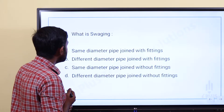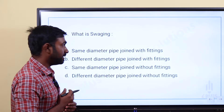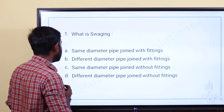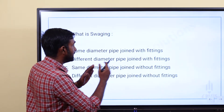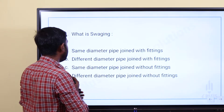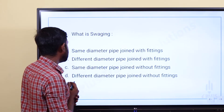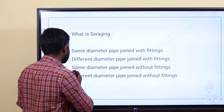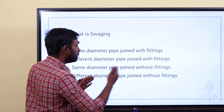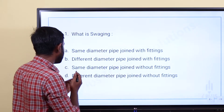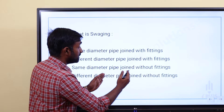What is Swaging? Swaging — what is the same diameter pipe joint with the fitting? Option B: different diameter pipe joint with the fittings. Option C: same diameter pipe joint without fittings. Option D: different diameter pipe joint without fittings.